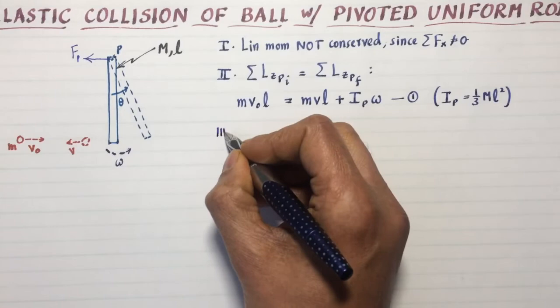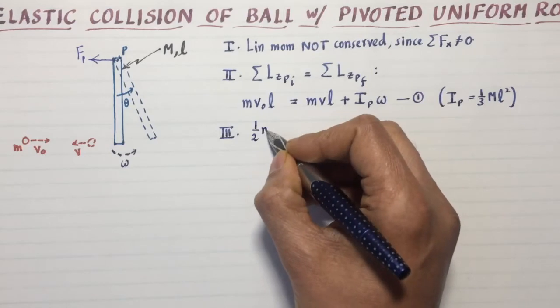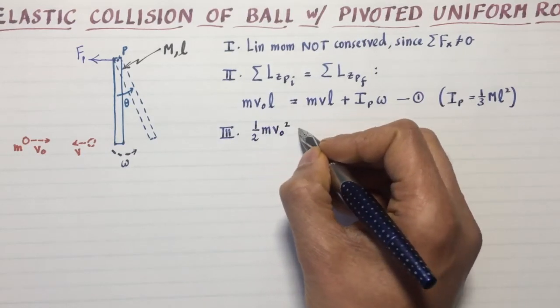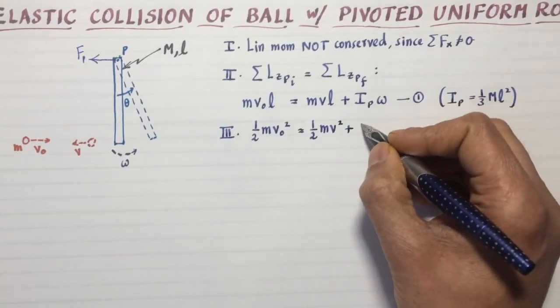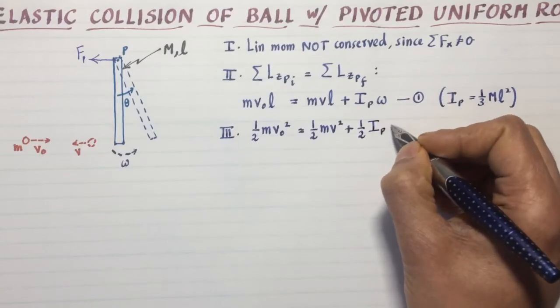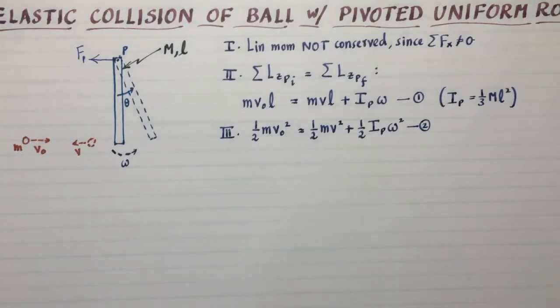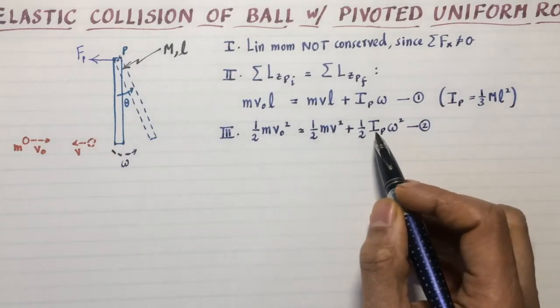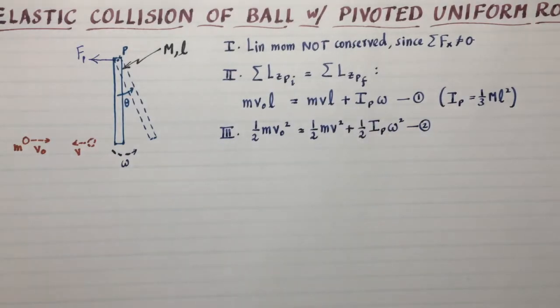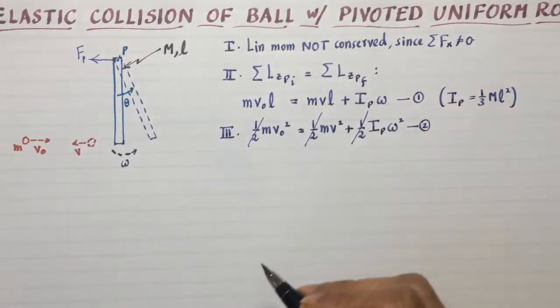The last thing that is conserved is energy, courtesy of the word elastic. The initial kinetic energy of the ball equals the final kinetic energy of the ball plus the final rotational kinetic energy of the rod itself. It's our aim to solve equation one and two. It's two equations, two unknowns: omega and v. But you notice this is a quadratic equation and a linear equation, so you can foresee some messy algebra if you don't do something. Fortunately, there's a very nice trick.